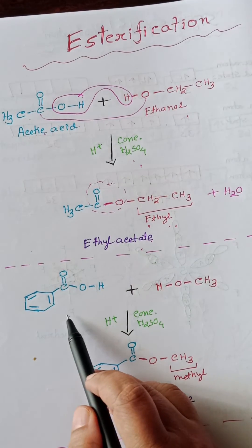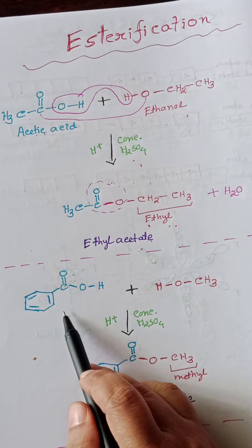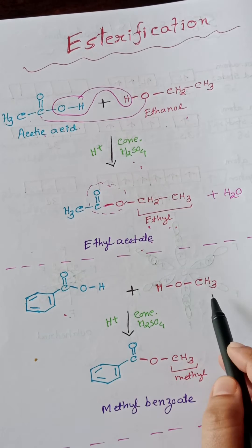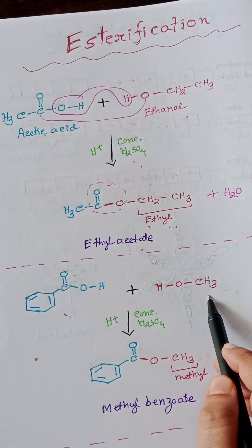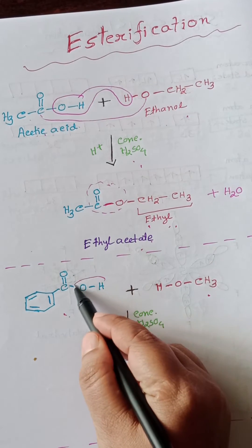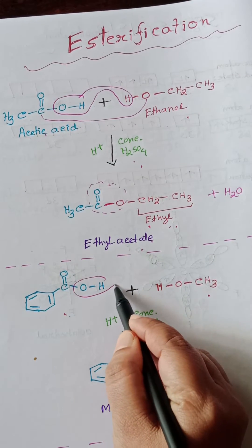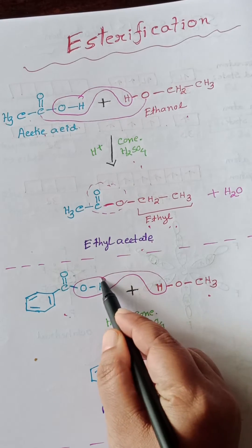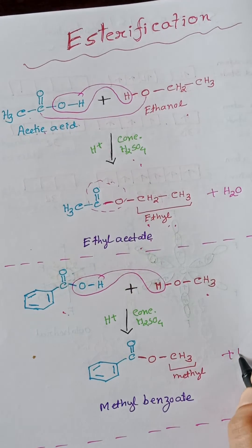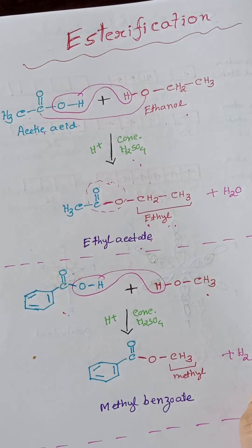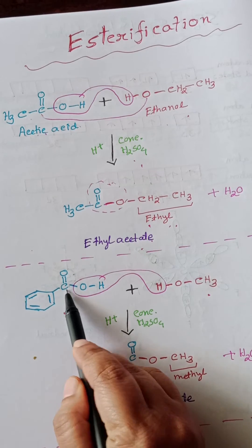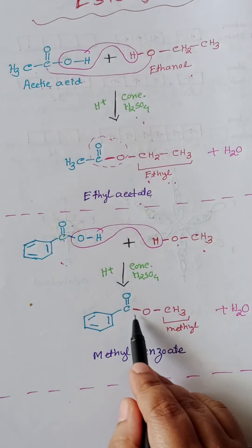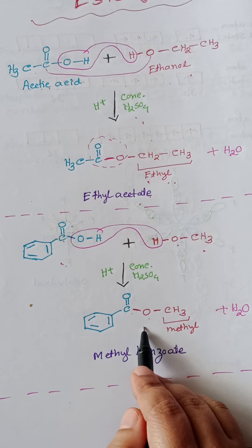Similarly, here I have taken another molecule — this is benzoic acid and this is methanol. The OH from benzoic acid and the hydrogen from the alcohol will leave as water, and this carbon and oxygen will make a bond to give a new ester compound.